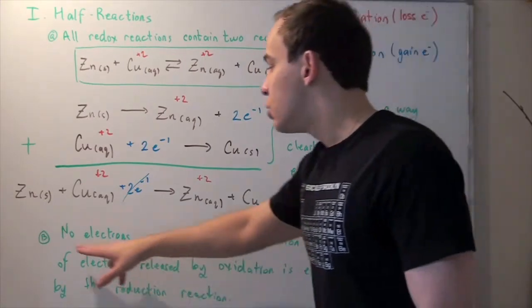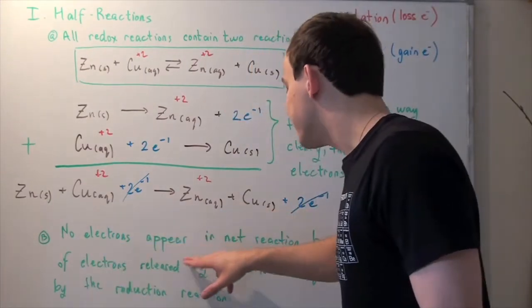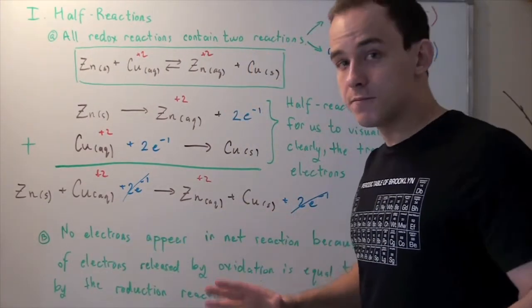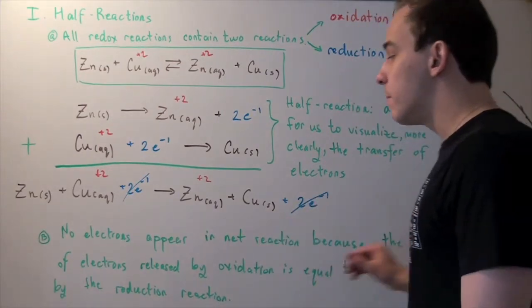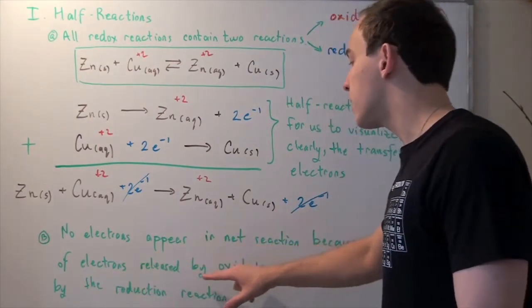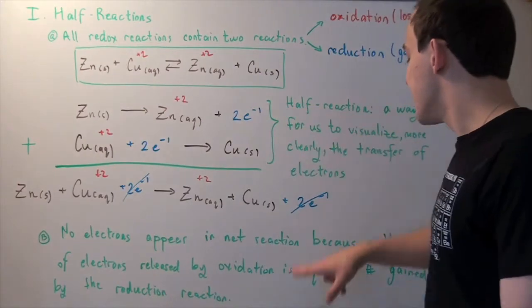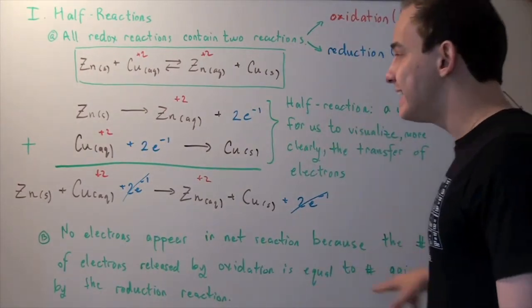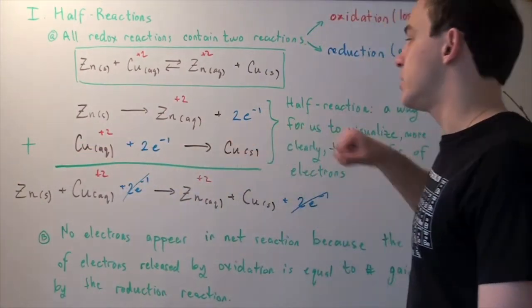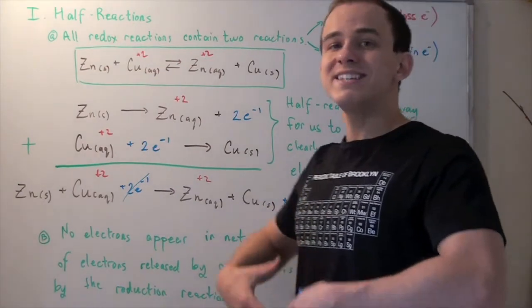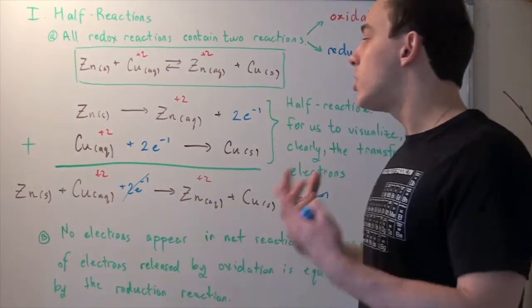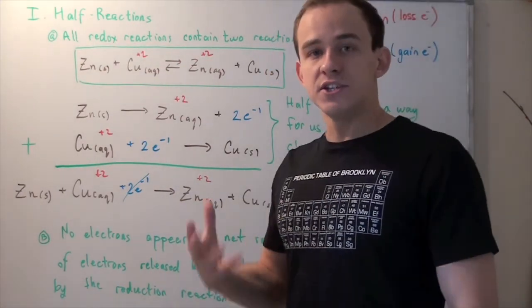So that means no electrons appear in the net reaction ever. And that's because the number of electrons released by our oxidation reaction is equal to the number gained by our reduction reaction. So whatever is gained must be lost somewhere. And that's the conservation of energy.